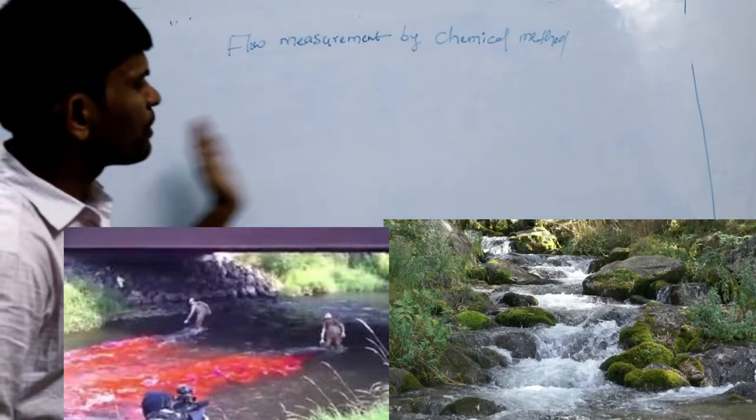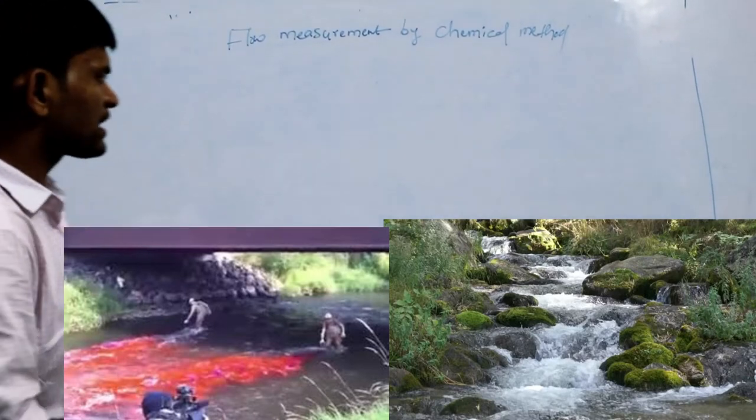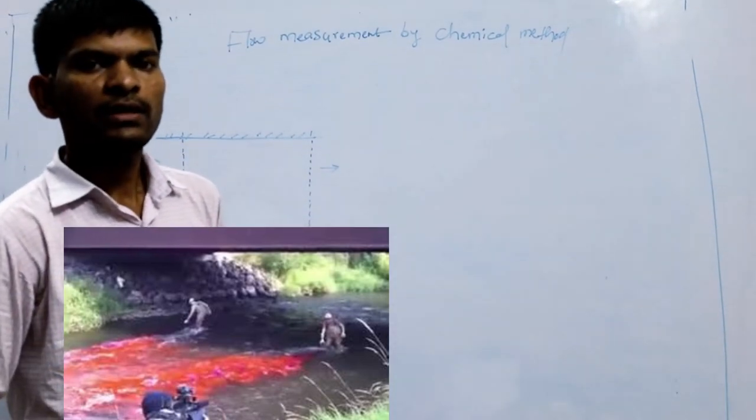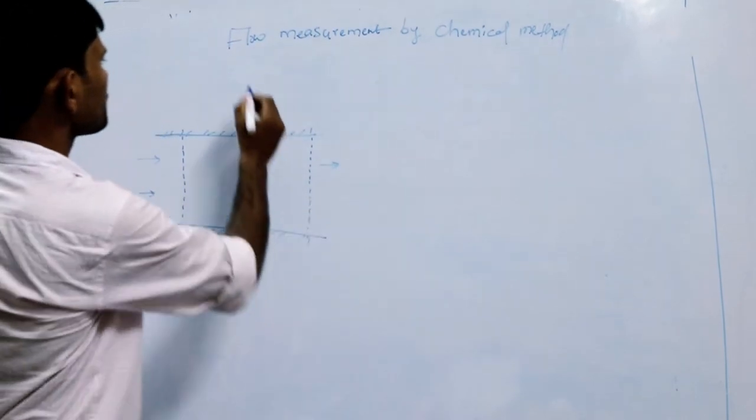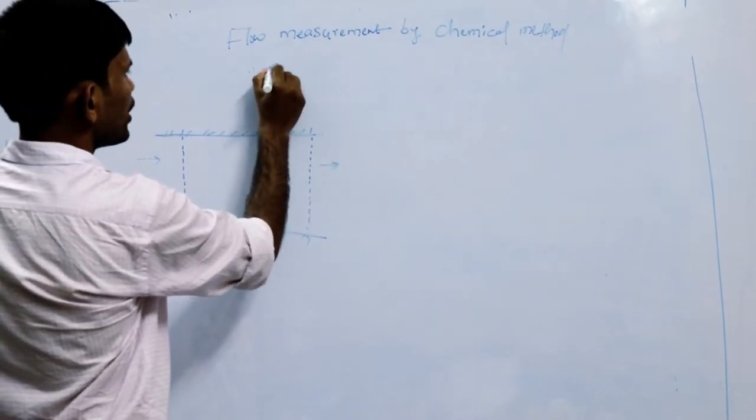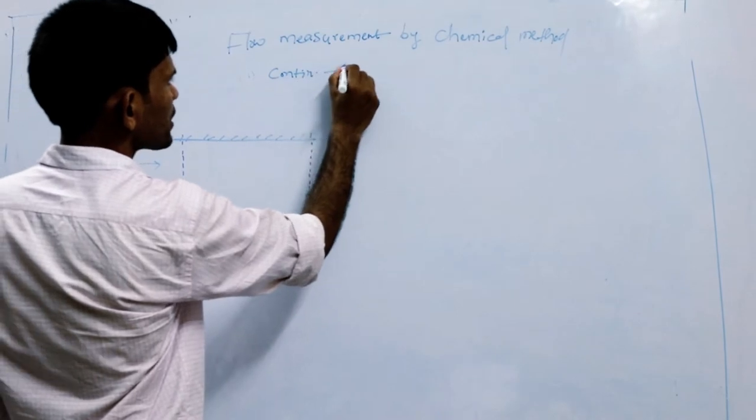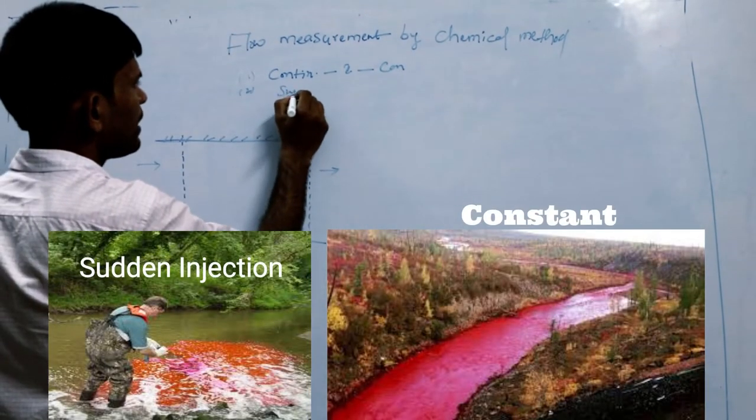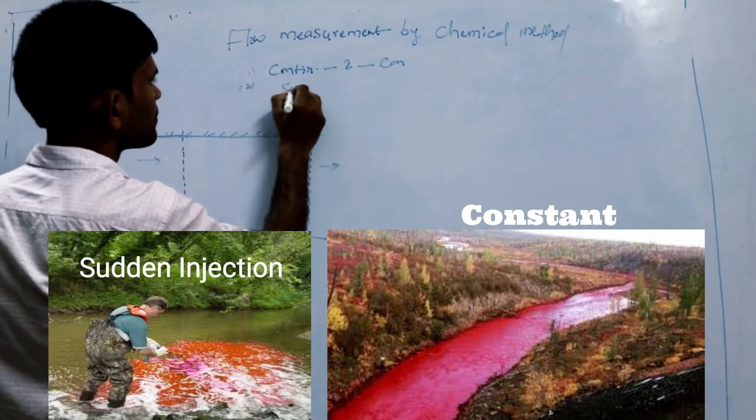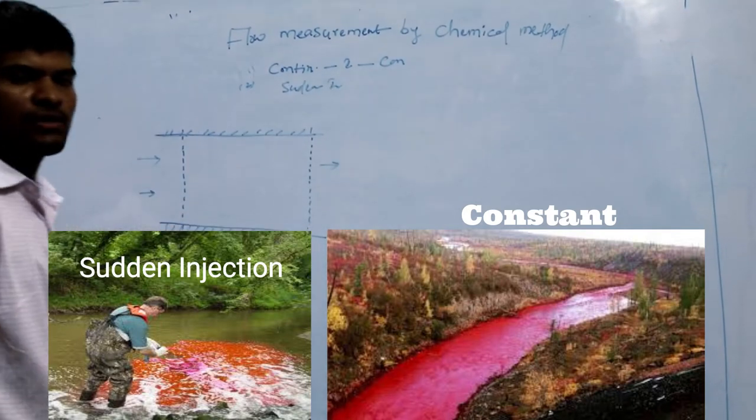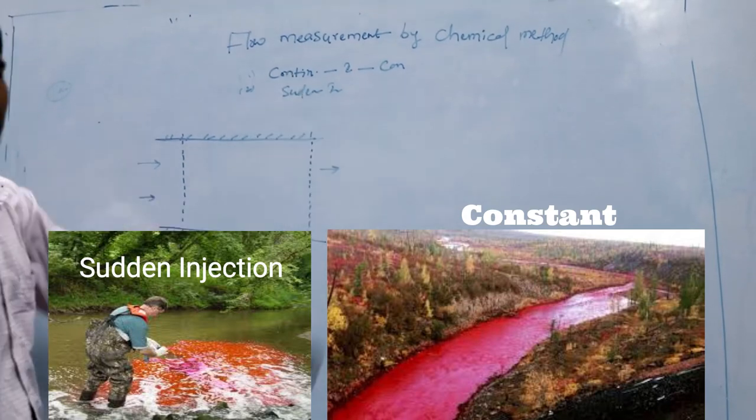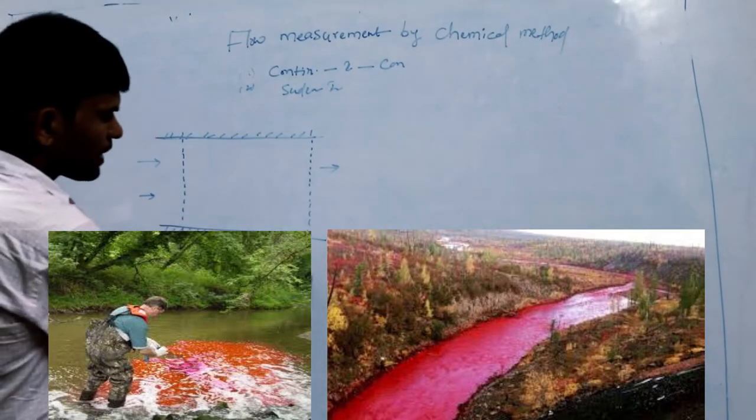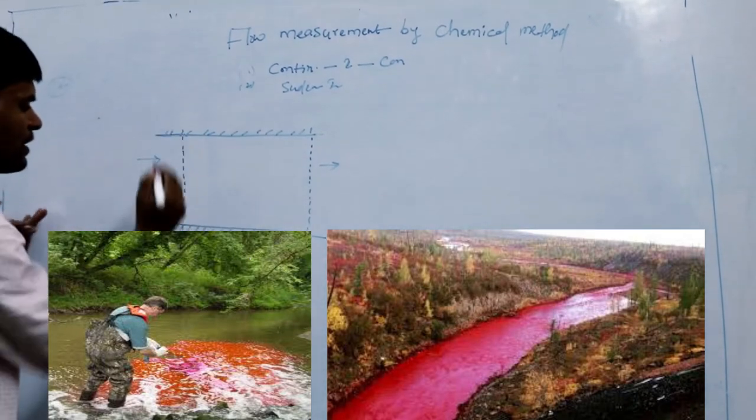The mixture concentration can then be measured. Let's see, this is your river. This chemical method is also called the dilution method. There are two types: one is the continuous injection method or constant rate method, and the second is the sudden injection method. Let's see the first one, the continuous injection method. We select a stream, this is the stream.